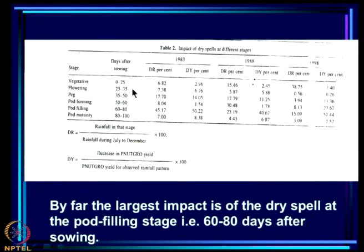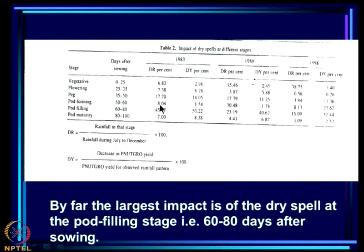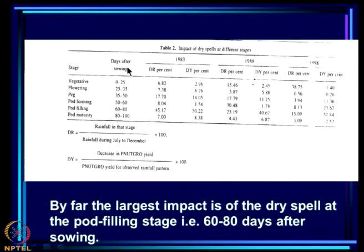These are the main phenological stages of the plant. By suppressing rain during these different stages, we measured what fraction of total rainfall was suppressed. DR is the rainfall in that stage divided by rainfall during July to December times 100. In 1983, for example, vegetative stage had 7% suppressed, peg stage 17%, and pod filling 45% suppressed.